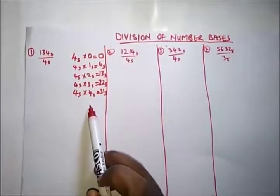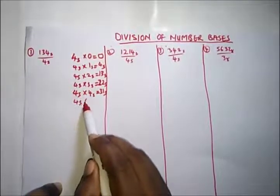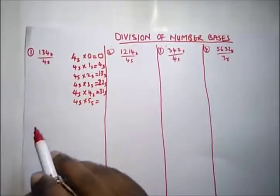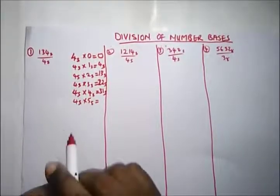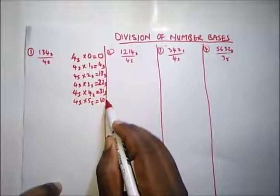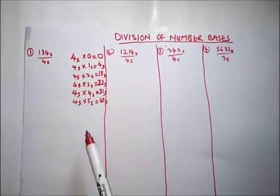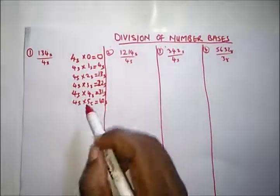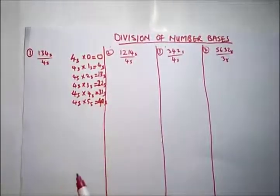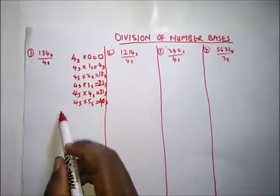We also have 4 base 5 times 5 base 5: that's 4 times 5 equals 20. How many times does 5 go into 20? Four times, remainder 0. So 4 times 5 in base 5 is 40 base 5. Now we can go forward to do our division.